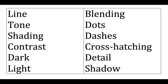When you describe the drawing, you want to describe what you see in the drawing and what the artist has actually drawn, but also mention the techniques that have been used. Use words we've used in class to describe the marks we made in the mark-making exercise — words like line, tone, shading, contrast, dots, dashes, etc.